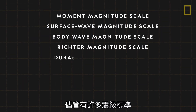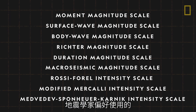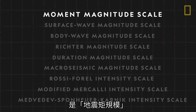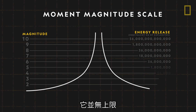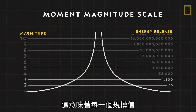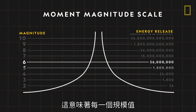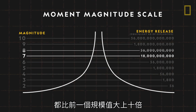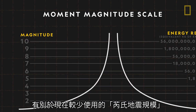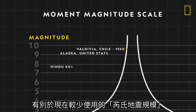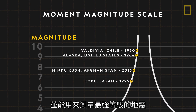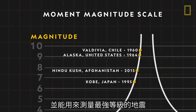While several scales of magnitude exist, the one seismologists prefer is the moment magnitude scale. It has no upper limit, and it measures earthquakes logarithmically, meaning that each magnitude on its scale is 10 times greater than the one before it. Unlike the now rarely used Richter scale, the moment magnitude scale can be applied globally and can measure quakes of the highest magnitudes.